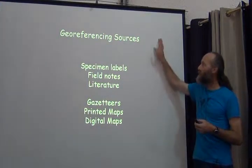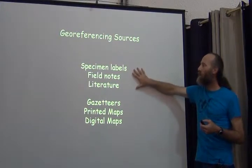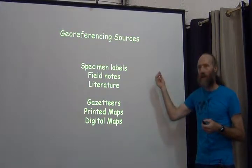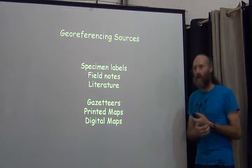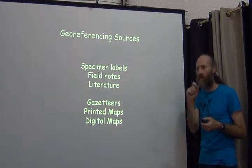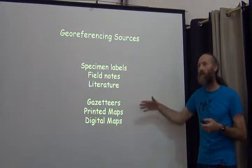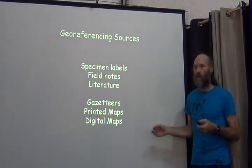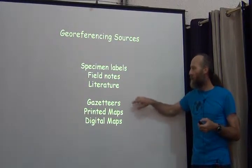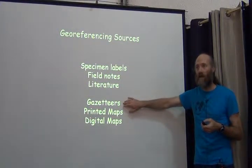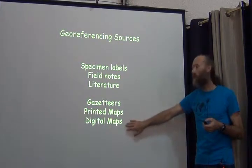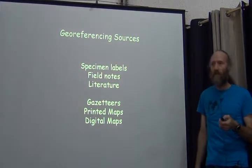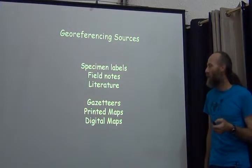The sources of georeferencing information fall into two categories. First, where the actual textual descriptions come from — off labels, out of field notes, or from published literature. Second, where to find the information needed to turn those text localities into spatial form — latitudes, longitudes, and uncertainties — using gazetteers of place names, printed maps, and increasingly digital maps.